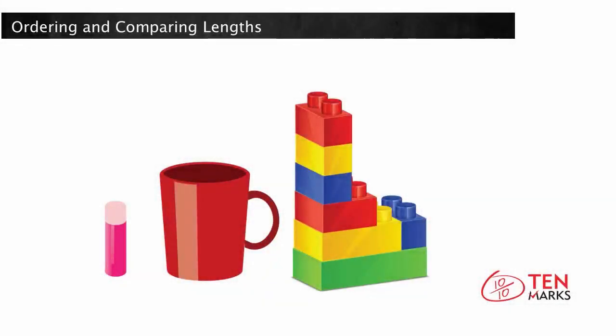This video uses images to compare and order the length of objects. These objects are in order from shortest to tallest. The shortest item is the chapstick. The tallest item is the Lego tower.